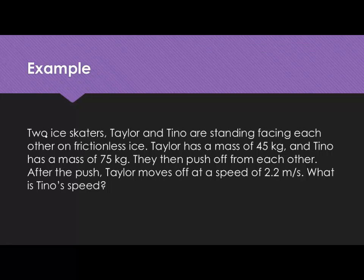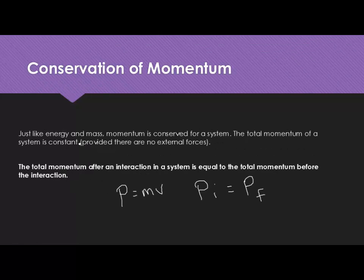In this first example, we have two ice skaters, Taylor and Tino. They are standing facing each other on frictionless ice. This frictionless ice is important to keep in mind. The total momentum is constant provided that there are no external forces. That means there's nothing on the outside of this system affecting how it's moving, like friction or an outside push or pull.